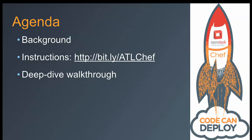We're going to do a deep dive walkthrough of deploying OpenStack with Vagrant, possibly Icehouse. We definitely have Havana working. Icehouse is booting. The instructions are at that Bitly link — it's a gist that walks through all the steps, so everything we do in the live demo and the walkthrough you'll be able to follow from home.